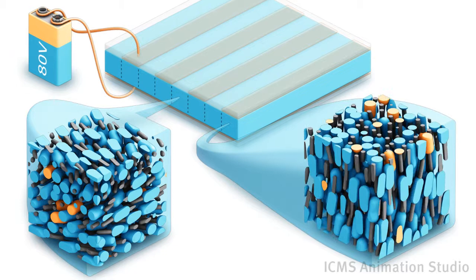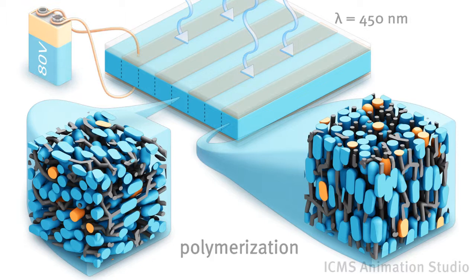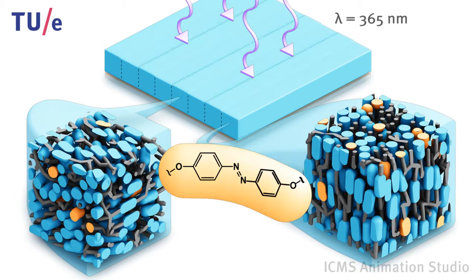When we apply a voltage between the electrodes, the helices locally unwind and the molecules orient perpendicular to the glass surface. In this state, the liquid monomers are photopolymerized and form a polymer network with alternating areas of helical order and uniaxial perpendicular order.